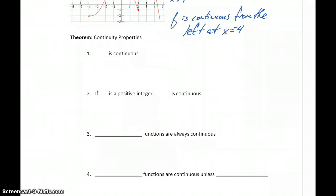Let's introduce some different continuity properties that we can apply to solving problems. The first is if our function F of X equals K, where K is some constant, that's always going to be a continuous function.